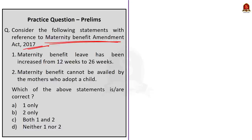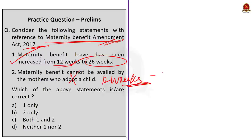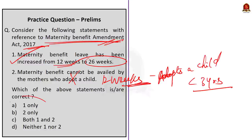The second question is regarding the Maternity Benefit Amendment Act 2017. The first statement is correct — we saw that every woman shall be entitled to a maternity benefit of 12 weeks, but the amendment increased this to 26 weeks. The second statement is incorrect because the amendment grants 12 weeks of maternity leave to a woman who legally adopts a child below three months of age. Therefore, the answer is Option A — statement 1 only.